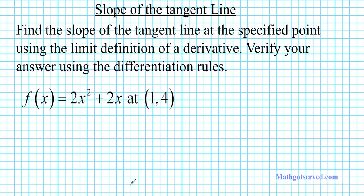Let's take a look at question number one. For problem one we are to find the slope of the tangent line at the specified point using the limit definition of the derivative, and then we are to verify our answer using the differentiation rules. The slope of the tangent line basically involves the steepness of the line that's tangent to this curve at this point — what is the rise over run of that line? Now you have only one point. In algebra you learn that you can find the slope of a line using two points, but the beauty of calculus and limits is that you can find the slope of a line using just one point. That's where the derivative comes in — the instantaneous rate of change.